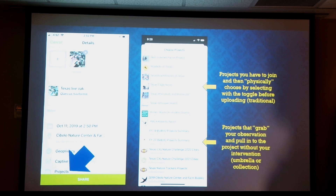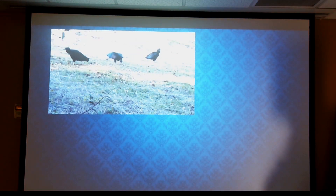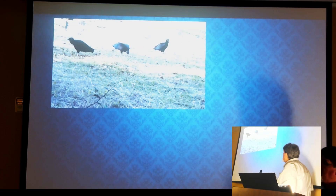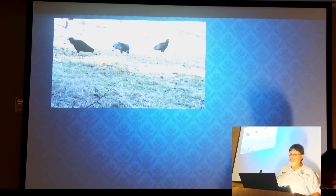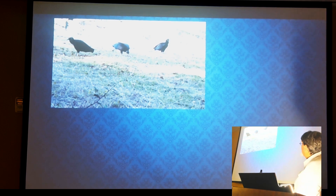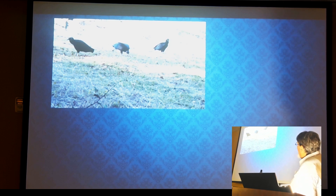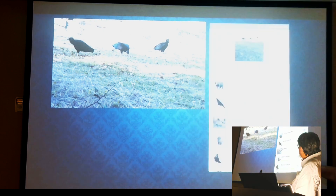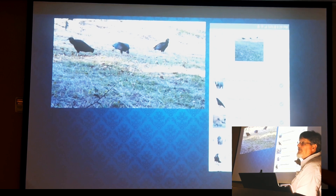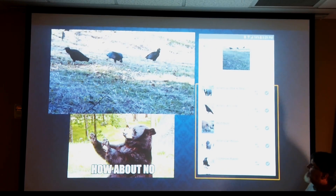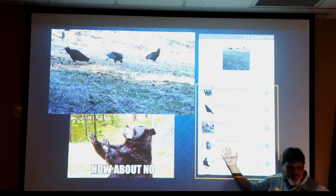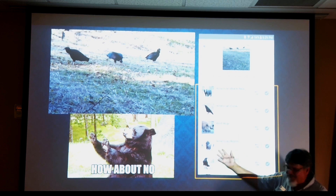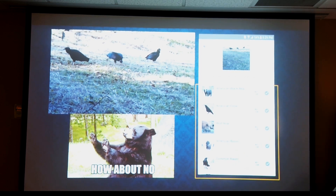Another thing to keep in mind — iNaturalist is giving you suggestions. What do you all think you have in this picture? Vultures. Actually, black vultures. And iNaturalist when it interpreted that image probably put black vultures as its first choice, but its other choices included American bison, wild boar — those are definitely not vultures. The first time I ever taught at an iNaturalist workshop, a lady took a picture of a shelf fungus on a rotting log, and the first choice that came up was river rock.